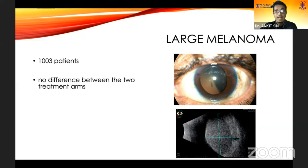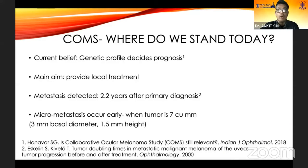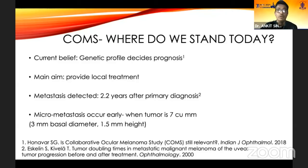In the small melanoma group, one third grew over five years and two thirds did not change. Risk factors for growth were presence of orange pigment, more than 2 mm of thickness, and more than 12 mm of basal dimension. Melanoma-specific mortality was 1% over five years. In the medium-sized group of about 1,300 patients, either treatment — enucleation or radiation — did not offer survival advantage over the other. Current evidence suggests treatment modality has no role in prognosis; it is the genetic profile of the tumor which decides metastatic risk. Importantly, micrometastasis can develop when the tumor is as small as 7 cubic millimeters — about 3 mm basal diameter and 1.5 mm height — so treatment should not be delayed irrespective of size.